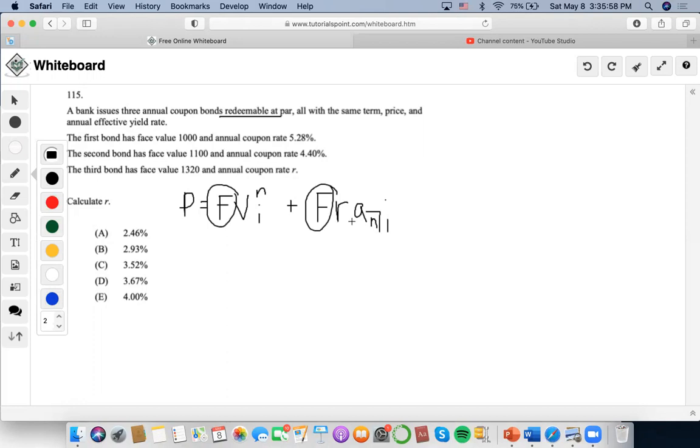So we're going to rearrange this type of bond pricing formula just so we could set it equal to R because that is what we're trying to find. We're going to first take out the common F, so we're left with this now.